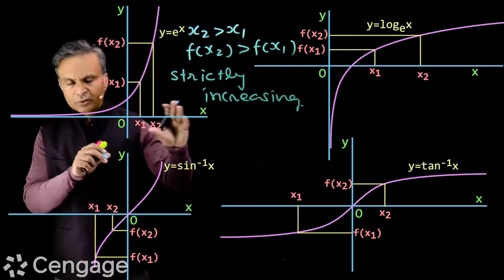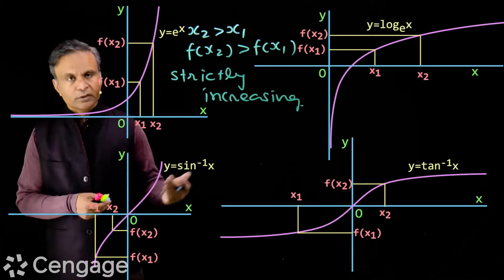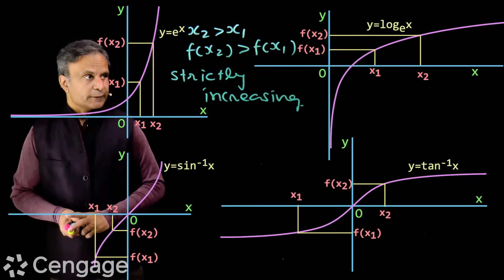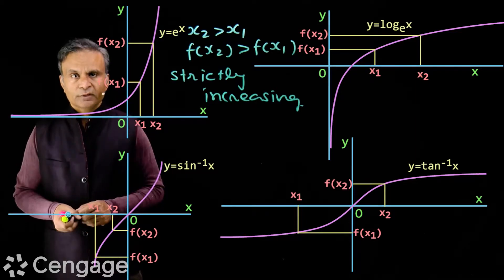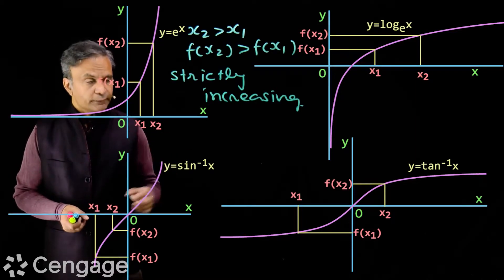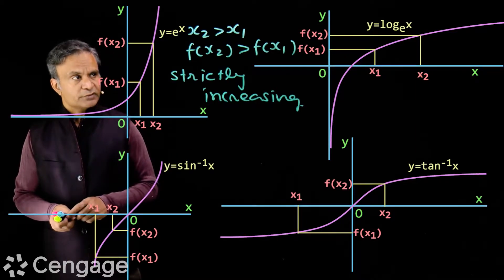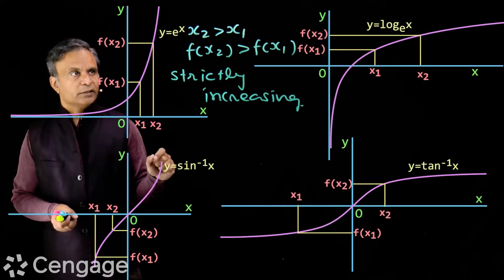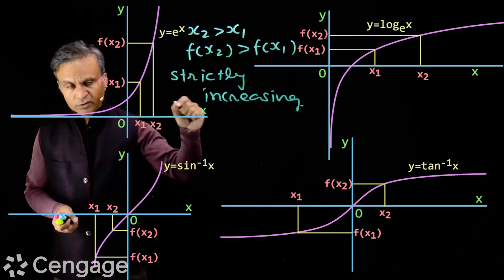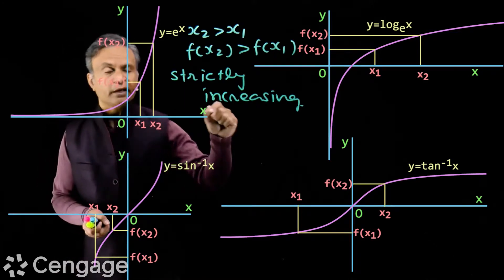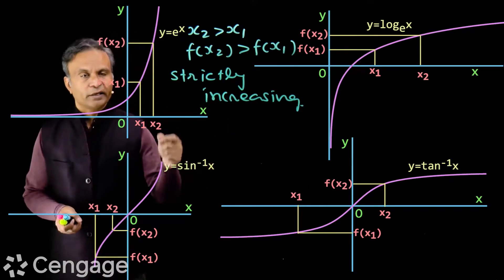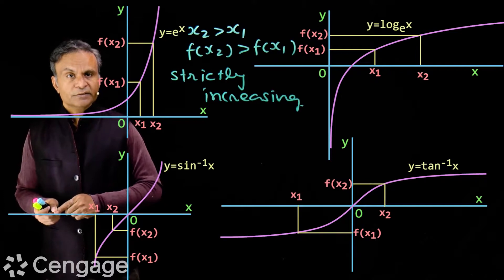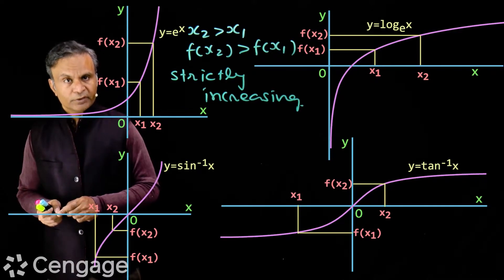The definition of a strictly increasing function is: if x2 is more than x1 then f(x2) will be more than f(x1). We also have one more definition from the derivative point of view, which we will do later. The value of the function increases and does not repeat.